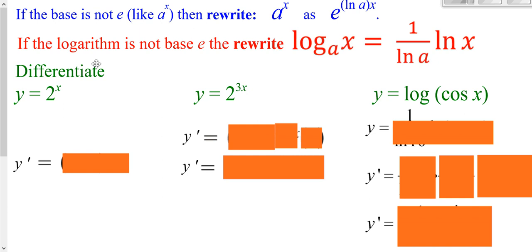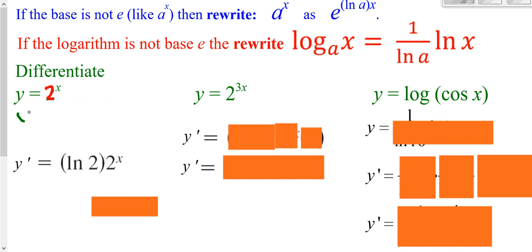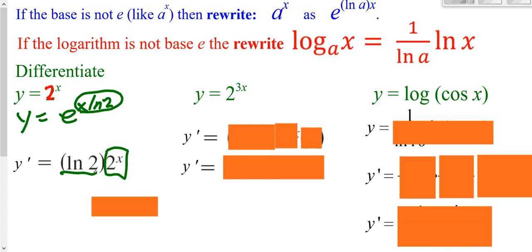For an example derivative, you follow that rule: it's going to be the natural log of your base times the original function times the derivative of the exponent, which would be 1. If you want, you could rewrite 2 as e^(ln 2), still raised to the X, giving e^(X·ln 2). When you take the derivative, it's still that same expression times the derivative of the exponent, which is just natural log of 2.